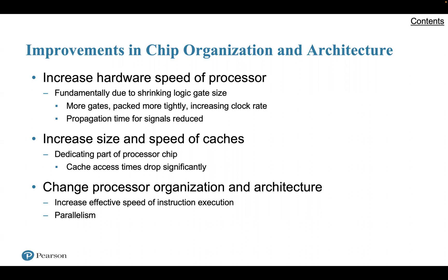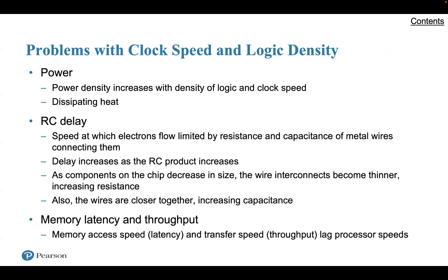Second, we can increase the size and speed of the caches interposed between the processor and main memory. In the last lecture we talked about three different types of caches used in processors. By dedicating a portion of the processor chip itself to cache, cache access times drop significantly. Third, we can make changes to the processor organization and architecture that increase the effective speed of instruction execution. Typically this involves using parallelism in one form or another, which is something we'll be covering throughout this course.